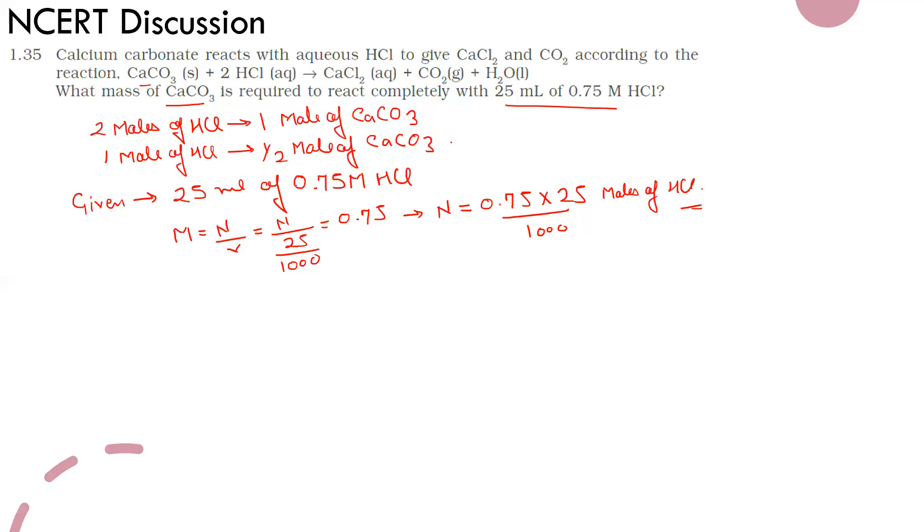From this, we know that 1 mole of HCl reacts with 1/2 mole of CaCO3. Then the required moles of CaCO3 will be equal to 1/2 times 0.75 times 25 divided by 1000. We multiply this number by half.